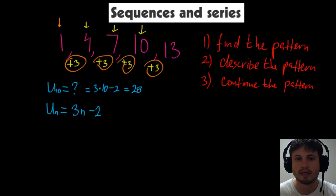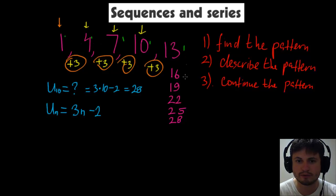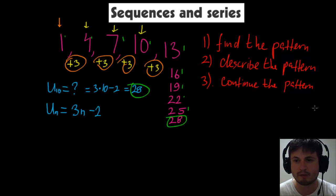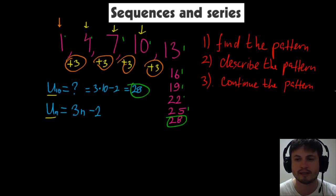Let's verify: continuing from 13, the next terms are 16, 19, 22, 25, 28. Counting them: one, two, three, four, five, six, seven, eight, nine, ten — yes, 28 is the tenth term. That's the mathematical way of finding patterns. We use the letter u to represent sequences, and you'll see this notation on your tests.